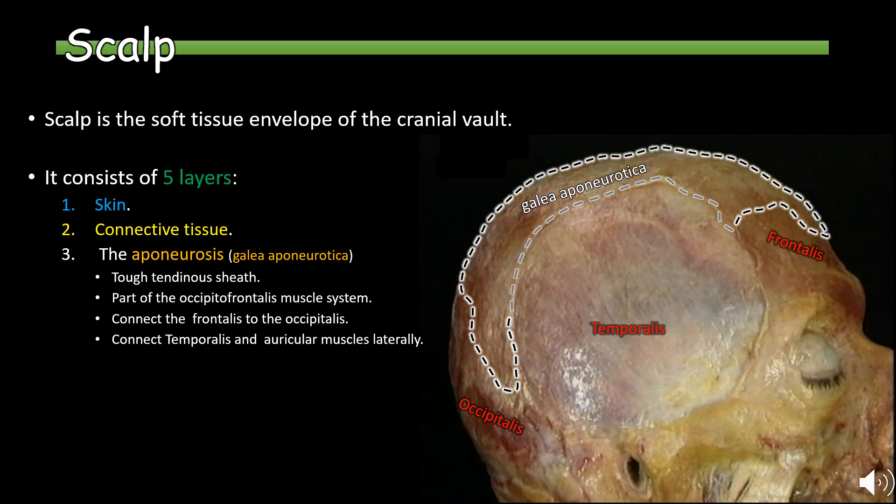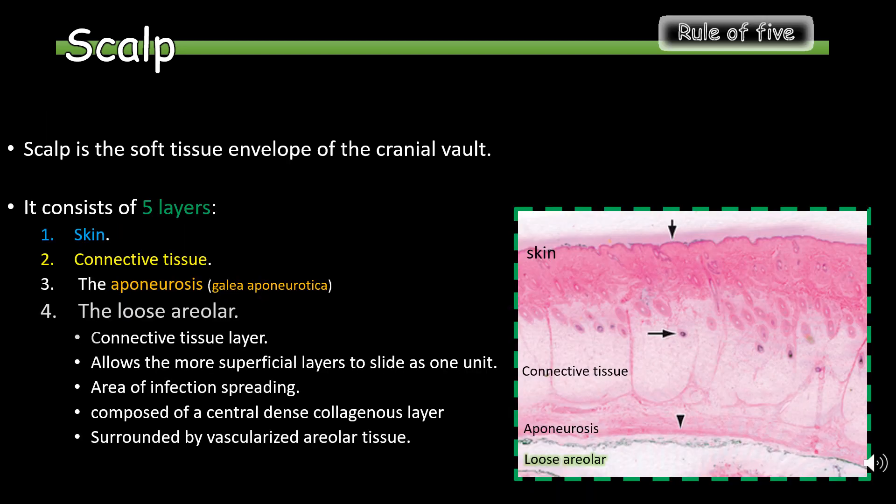The aponeurosis also connects the temporalis and auricular muscles laterally. The following layer is the loose areolar tissue, which is also a connective tissue layer. It allows the more superficial layers to slide as one unit and is a common area of infection spreading. It is composed of a central dense collagenous layer surrounded by vascularized areolar tissue.